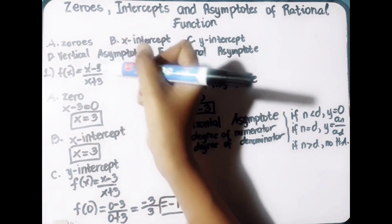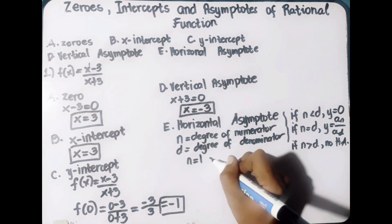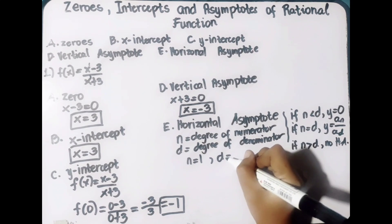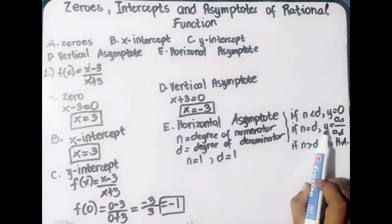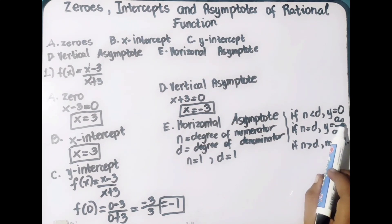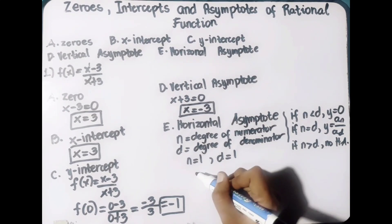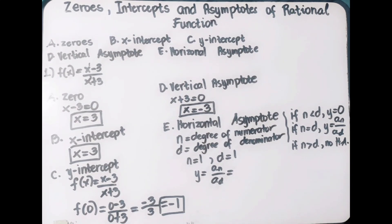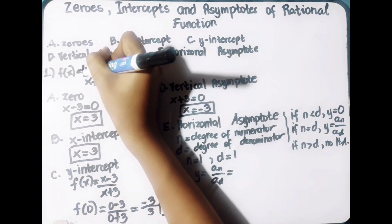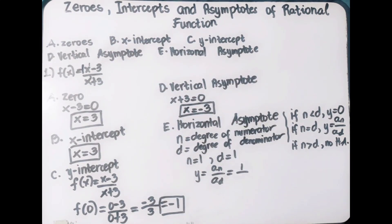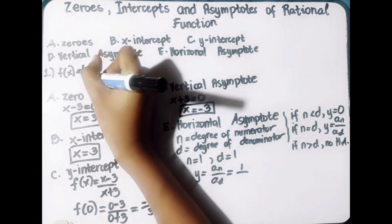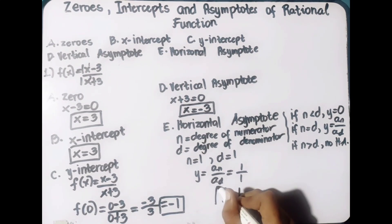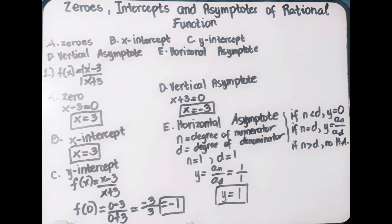In our function, the degree of the numerator is 1, so n equals 1, and the degree of our denominator is also 1. Since n equals d, our horizontal asymptote is y equals the leading coefficient of the numerator divided by the leading coefficient of the denominator. The leading coefficient of the numerator is 1 and of the denominator is also 1, so y equals 1 over 1 equals 1. Therefore, the horizontal asymptote is the line y equals 1.